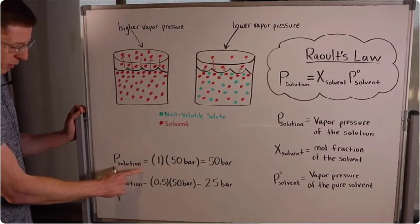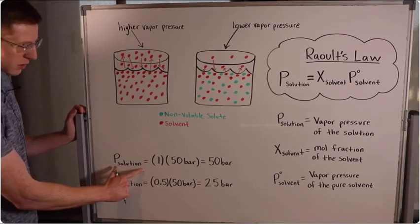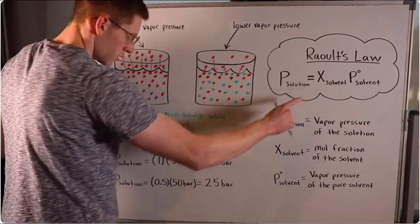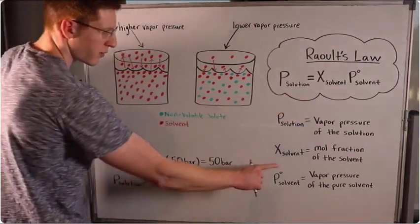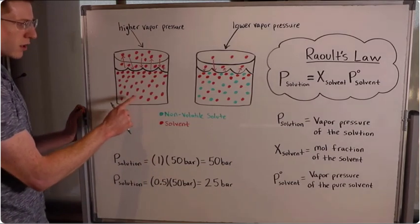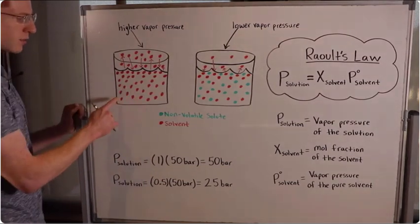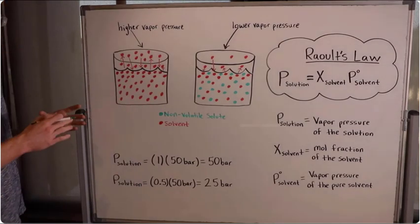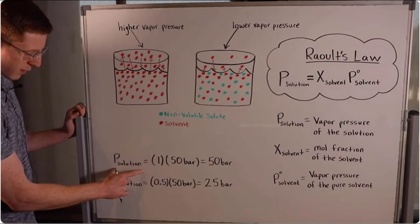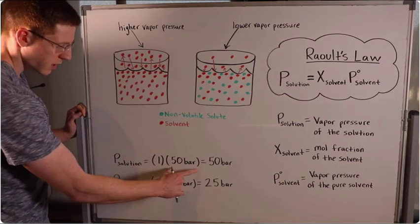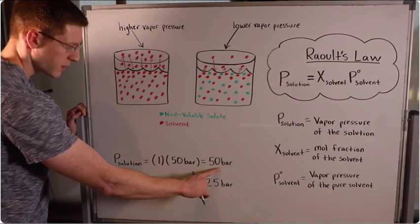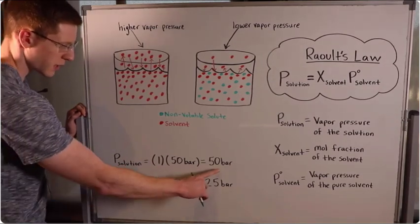In the first example, we're calculating P_solution, and our X_solvent is 1 — meaning the mole fraction of the solvent is 1. That's a situation where our solution is entirely made up of a pure solvent, so they're really the same thing. We would expect the same vapor pressure for our solution as for the pure solvent, and that's the case: 1 times 50 bar is 50 bar.